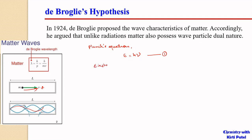From Einstein's equation we have E = mc², which relates energy with matter or mass. When we combine these two equations, both have the same left-hand side, so we equate the right-hand sides: hν = mc².